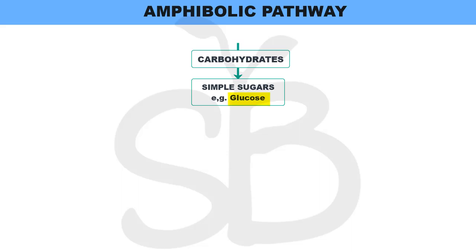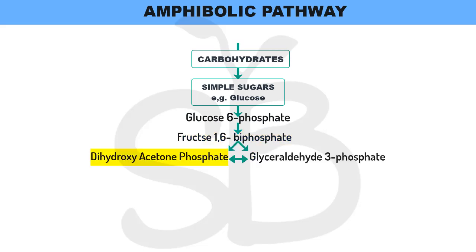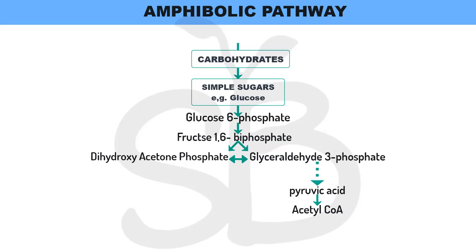Glucose enters the glycolytic pathway. Glucose is converted to Glucose 6-phosphate, then to Fructose 6-phosphate, then to Fructose 1,6-bisphosphate. This splits into Dihydroxyacetone Phosphate (DHAP) and Glyceraldehyde 3-phosphate. These two compounds pass through multiple steps to produce two molecules of pyruvic acid. The two molecules of pyruvic acid undergo oxidative decarboxylation to form Acetyl Coenzyme A, which then enters the Krebs cycle.